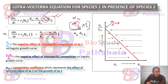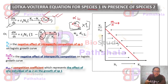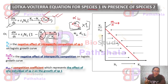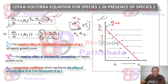The modified equation is: dN1/dt = r1·N1 × (1 − N1/K1 − α12·N2/K1). Here, N1/K1 represents the negative effect of intra-specific competition of species 1 on the logistic growth curve, while α12·N2/K1 represents the negative effect of inter-specific competition from species 2 on the logistic growth curve of species 1.